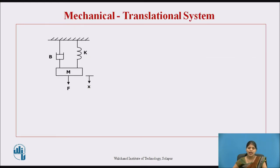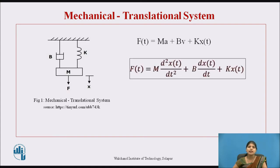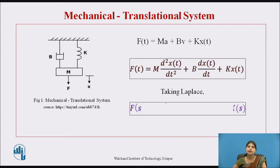Consider the simple mechanical translational system shown in figure one, having three elements: spring, mass, and damper. Due to applied force, mass M displaces by amount X in the direction of force. According to Newton's law of motion: F(t) = M·d²X/dt² + B·dX/dt + K·X(t). Taking the Laplace transform: F(s) = Ms²X(s) + BsX(s) + KX(s). This is the equilibrium equation for the given translational mechanical system.